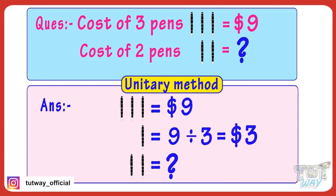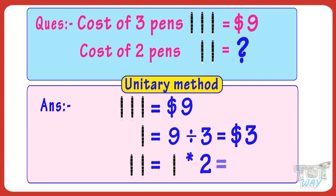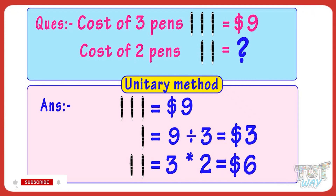Now we have the cost of one pen. The cost of two pens will be the cost of one pen multiplied by 2. The cost of one pen is $3, so 3 multiplied by 2 equals 6. So the cost of two pens is $6.